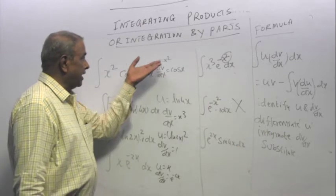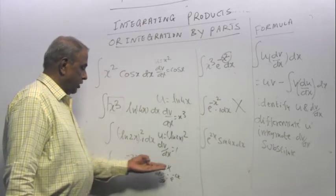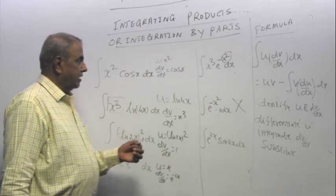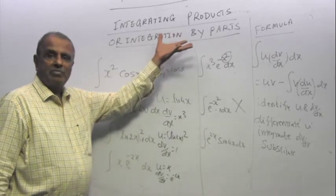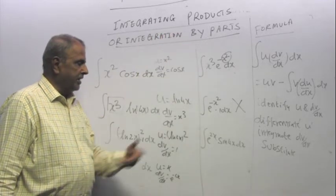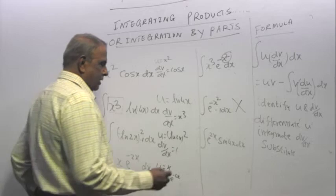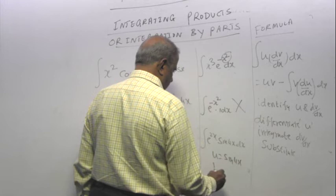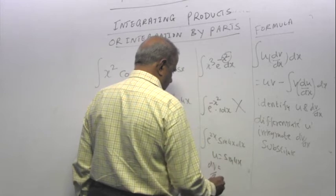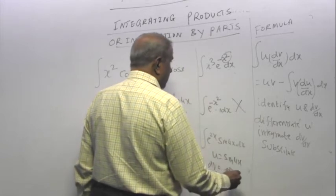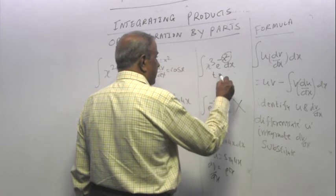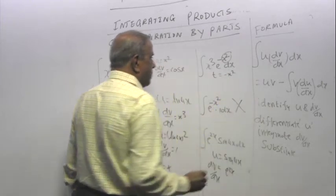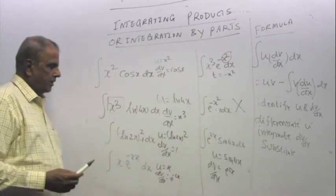Here, e power 2x sin 4x. e power 2x is u. Differentiate e power 2x, again differentiate e power 2x, again differentiate e power 2x. It does not go. It keeps on repeating. Sine gets you cos. Cos gets you sine. Sine gets you cos. Cos gets you sine. It keeps on repeating. So now look, in all the cases where we call u as x squared, u as x, things vanished. Here nothing vanishes. Here it does not matter. Normally I would say u is sine 4x, dv/dx is e power 2x.